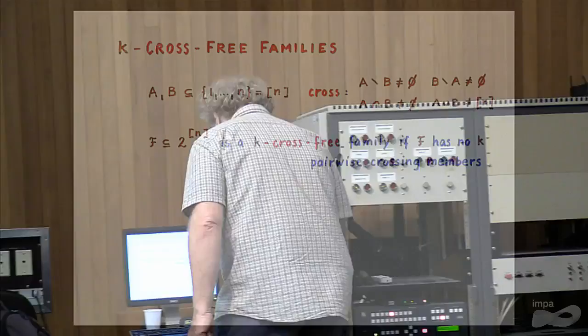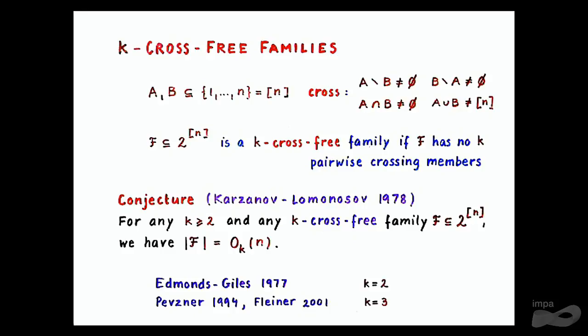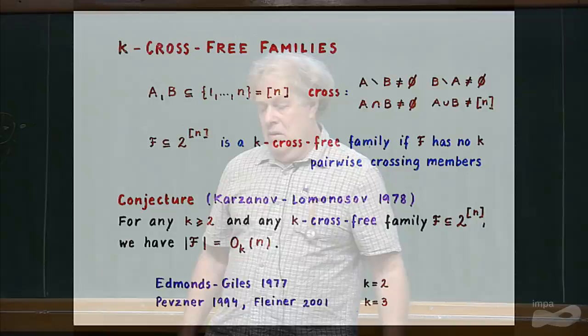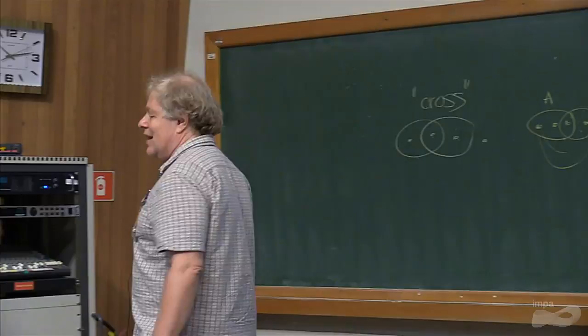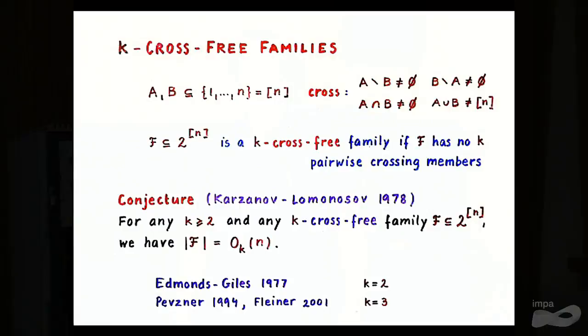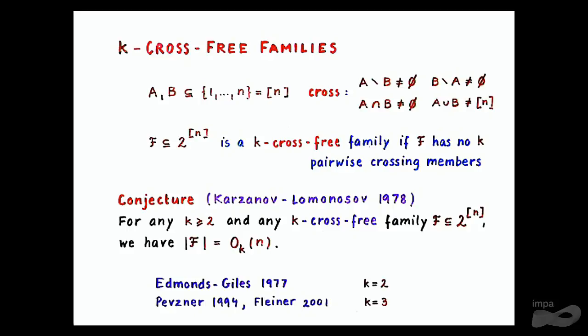The conjecture that Karzanov and Lomonosov made in 1978 was that for a fixed K, the maximum number of sets in a family with no K pairwise crossing sets is linear. For K equals 2 it is almost trivial — an exercise in mathematical logic. For K equals 3, which was an important case, Pepsner found the first linear proof. The best-known bound is due to Flayner, but we don't really know the best constant. For larger values of K the problem is unsolved.